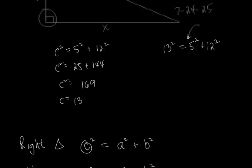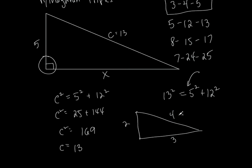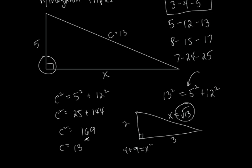Now, not every right triangle gives whole-number sides. If you have a right triangle with legs two and three and an unknown side X, then two squared plus three squared equals X squared: four plus nine equals thirteen, so X equals the square root of thirteen. Let me give you a worksheet and then you can go.